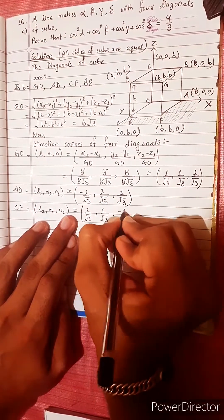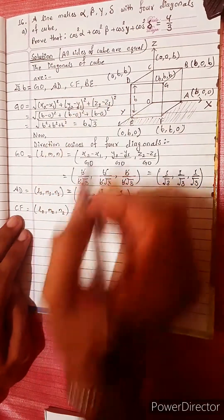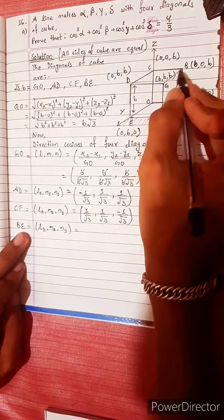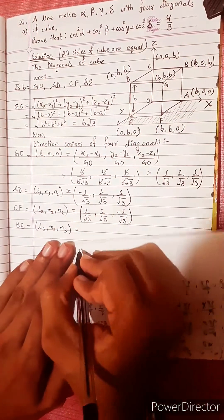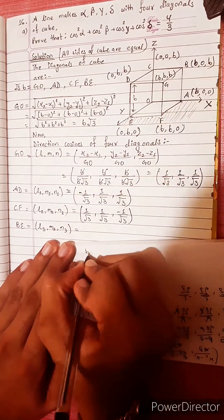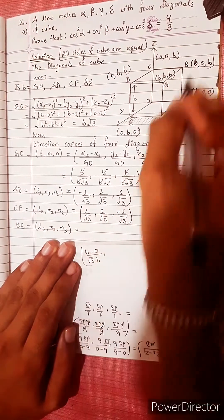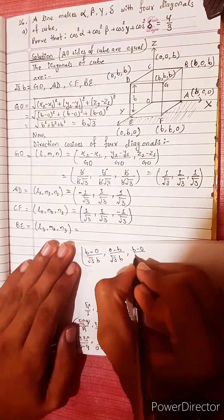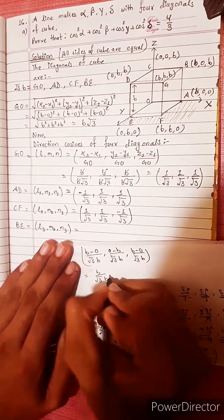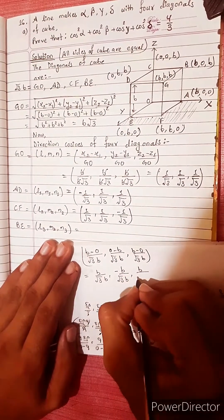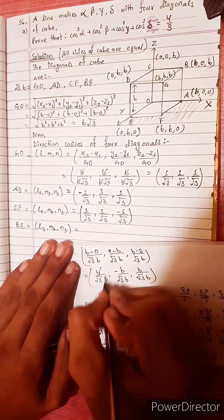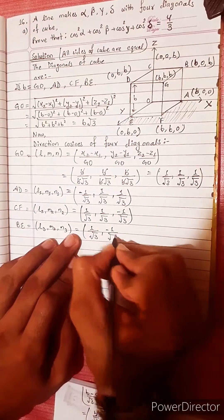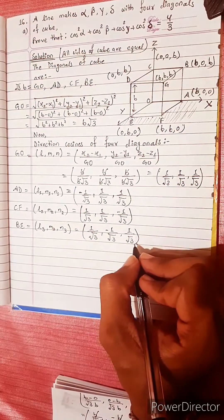Continuing: direction cosines are −1/√3, 1/√3, −1/√3 and −1/√3, −1/√3, 1/√3. For another diagonal: using formula, (b − 0)/√3·b, (0 − b)/√3·b, (b − 0)/√3·b gives (1/√3, −1/√3, 1/√3). After cancellation: 1/√3, −1/√3, 1/√3.